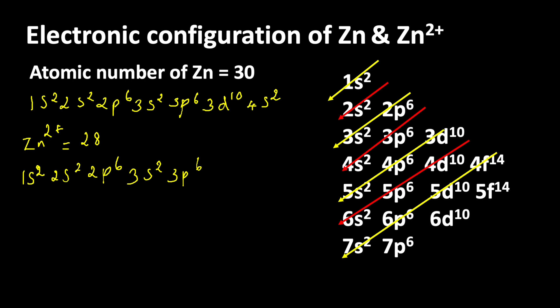After 3p6 we write 3d10. Counting all the electrons: 2 plus 2 is 4, plus 6 is 10, plus 2 is 12, plus 6 is 18, plus 10 is 28. This confirms the electronic configuration of zinc and its ion zinc 2 plus.